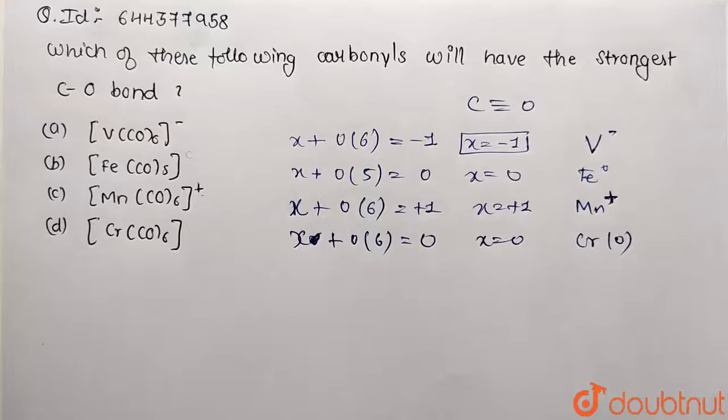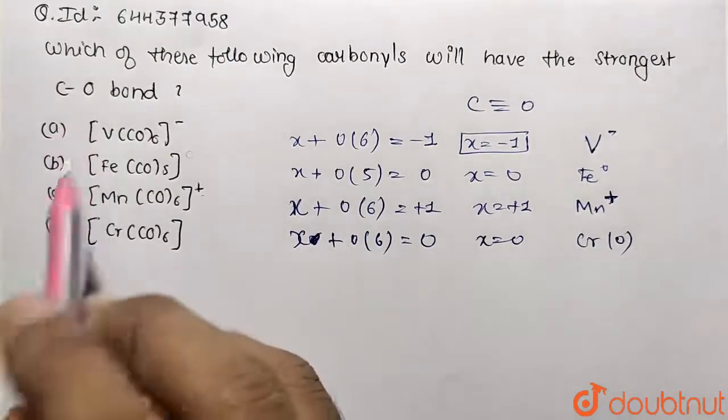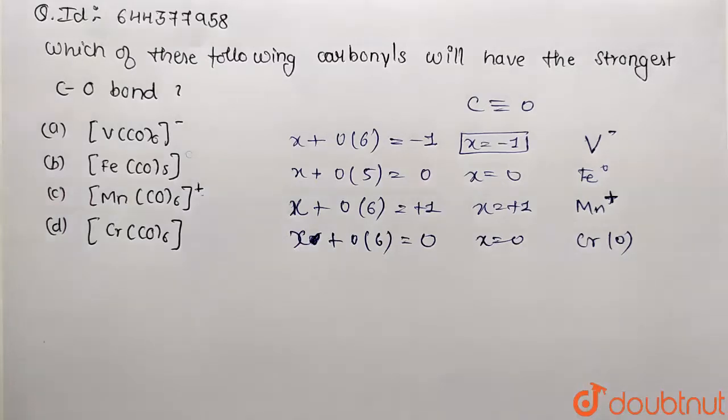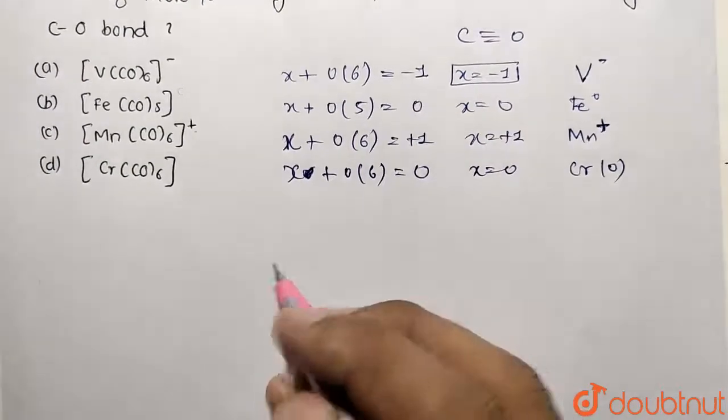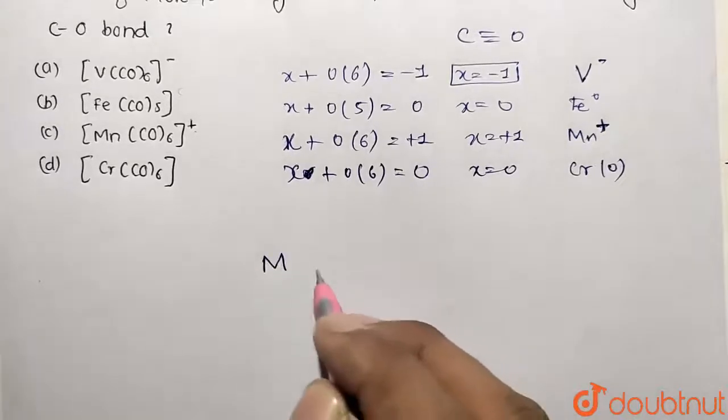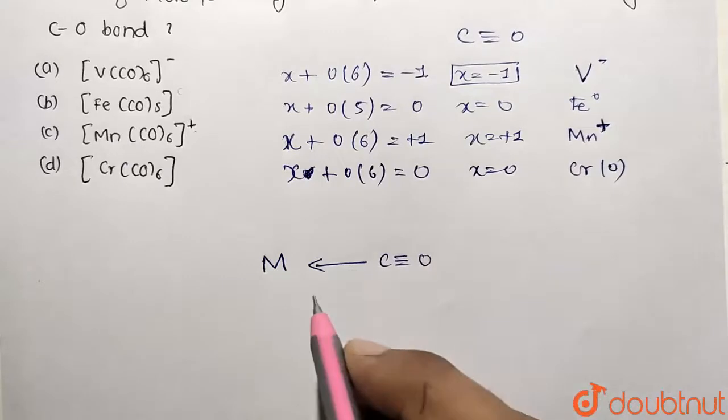So chromium is also present in ground state. Now I want to tell you that the bond length is going to be strongest where there is going to be lowest synergic bonding or backbonding. So for that understand the synergic bonding phenomena. We are having metal and the ligand is coming to make a coordinate bond. So this is the sigma bond basically formed.